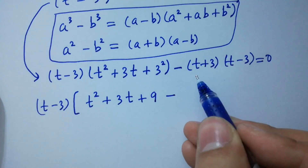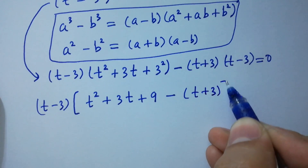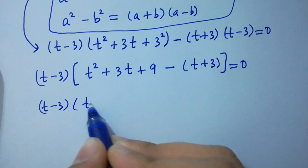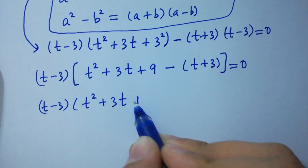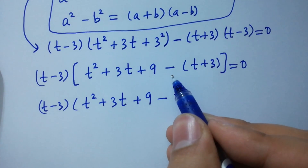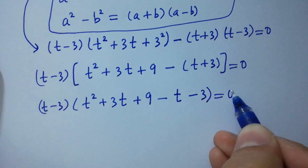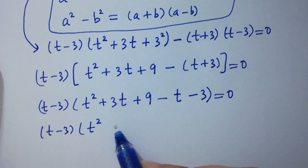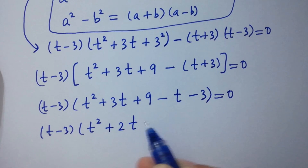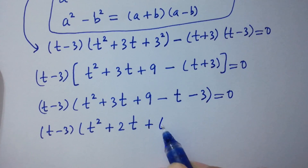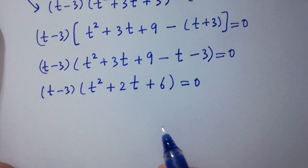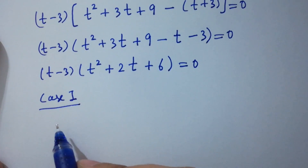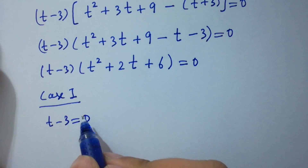Taking (t minus 3) common, we have t squared plus 3t plus 9 minus (t plus 3) equal to 0. So t minus 3 times (t squared plus 3t plus 9 minus t minus 3) equal to 0, which simplifies to t minus 3 times (t squared plus 2t plus 6) equal to 0.